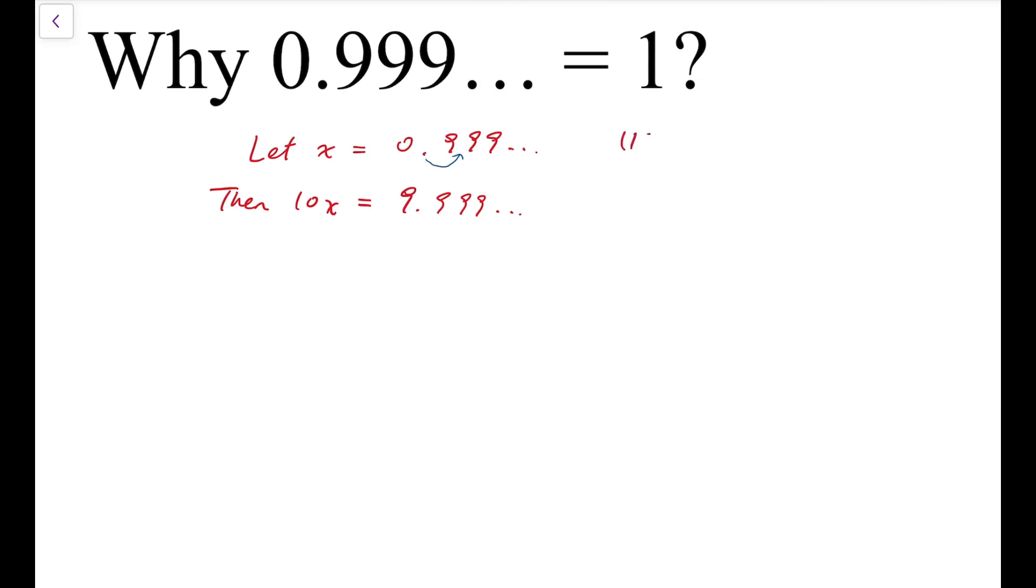Now we have two equations. So I'm going to subtract the second one by the first one. And so for the left hand side, we have 10x minus x. And for the right hand side, all the decimal parts vanish. And what's left is just 9 minus 0, which is 9.